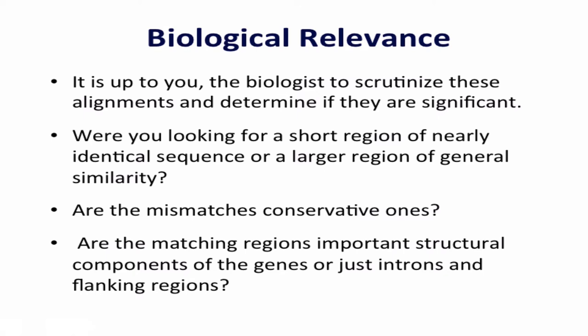Ultimately, biological relevance is something you have to figure out yourself. BLAST can only compute a statistic and show you an alignment. Everything else must be inferred from the nature of your query, the database chosen, and structural information gleaned from the alignment. Were you looking for a short region of near identity or a large region of general similarity? If there are mismatches, are they conservative — the plus signs you'd see in a protein-protein match? Are the matching regions important structural components, or have you matched an intron or flanking region?